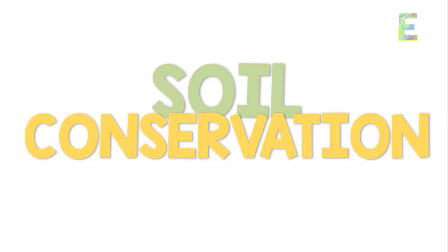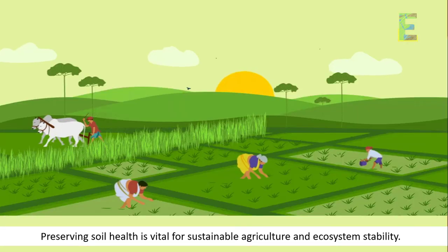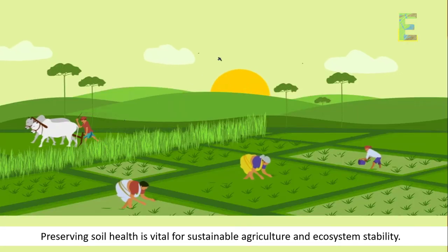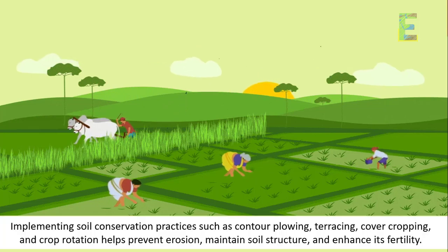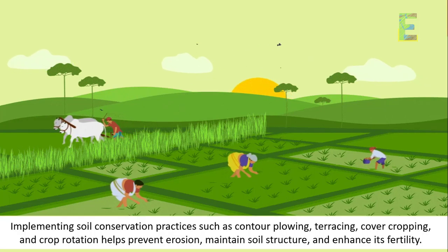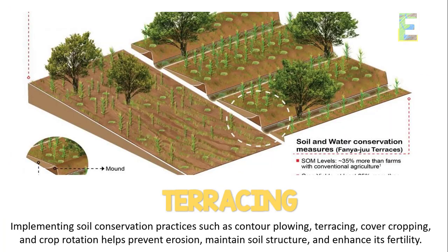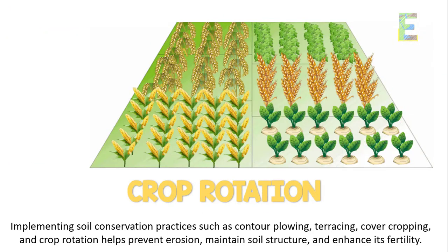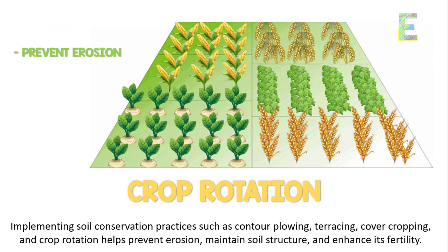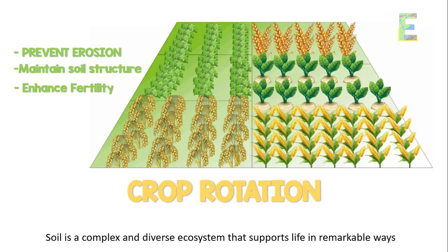Soil Conservation. Preserving soil health is vital for sustainable agriculture and ecosystem stability. Implementing soil conservation practices such as contour plowing, terracing, cover cropping, and crop rotation helps prevent erosion, maintain soil structure, and enhance its fertility.